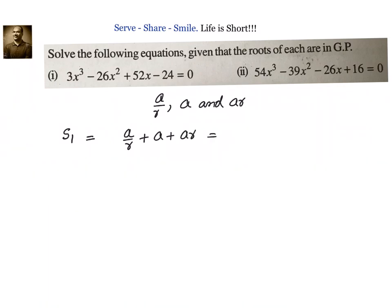equal to -b/a, that is 39 divided by 54. Can we simplify that and write down a into (1 + r + r²)/r equal to 13/18? And we also know that